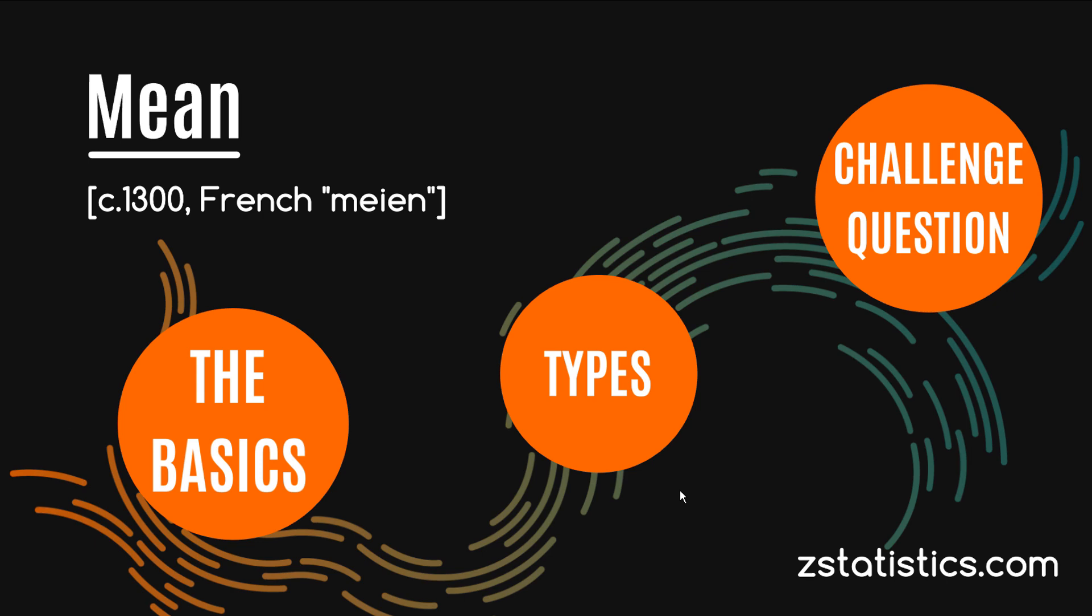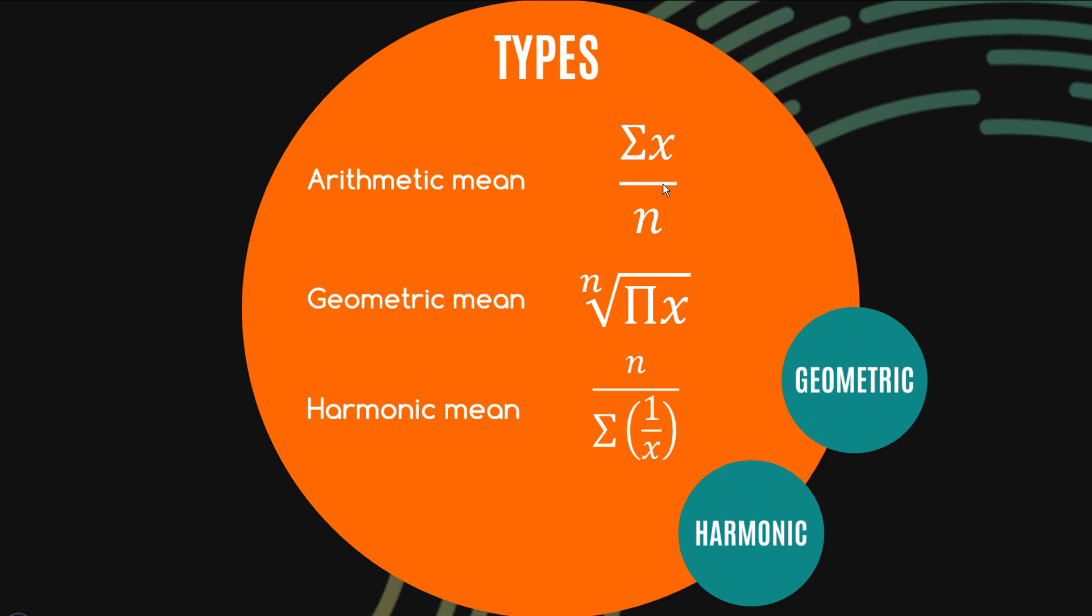So let's have a look at some of the other types of means so here's our arithmetic mean again there's also something called a geometric mean which unlike the arithmetic mean you actually need to find the product of all the observations in the sample and then take the nth root of that product and we'll see how that works in just a second.